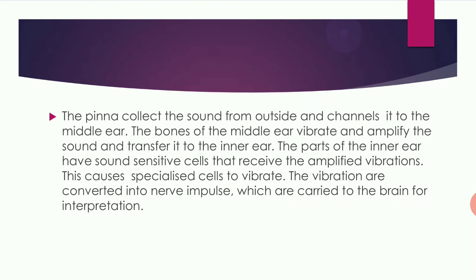First, the outer ear collects all the sound. It is transferred to the middle ear, which starts vibrating and passes it to the inner ear. In the inner ear, sound-sensitive cells detect the sound, convert it into nerve impulses, and carry those impulses to the brain for interpretation of what the other person is speaking.